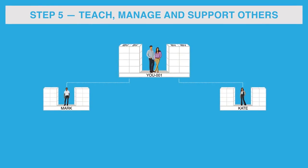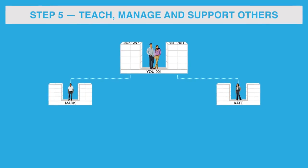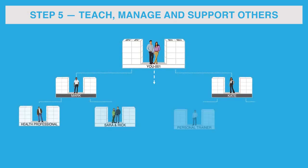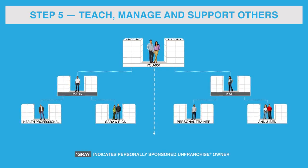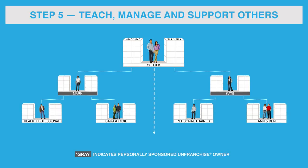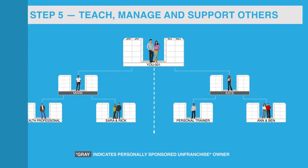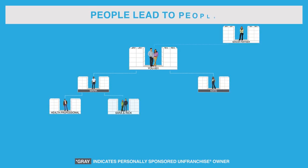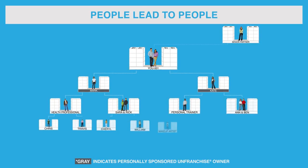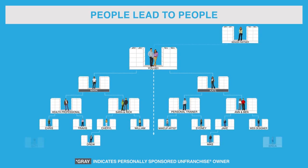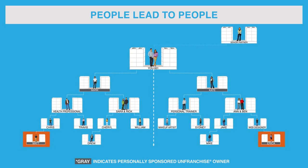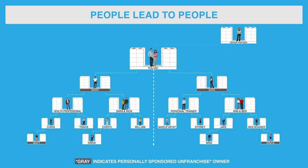Step 5: Teach, manage, and support others. People lead to other qualified people who are developing their unfranchised business. The business expands vertically in depth and can grow into multiple geographic locations. By personally sponsoring more than two, you will accelerate the growth of your business while also supporting the growth of others on your team. Additional people that are personally sponsored can only be placed vertically under the left or right side of a business development center of those on your team.